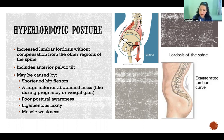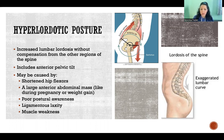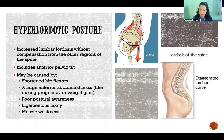Hyperlordotic posture also includes anterior pelvic tilt. I included a link to an explanation of pelvic tilt in the description below if you'd like a review of what that means and how to assess it. Hyperlordotic posture can be caused by all sorts of things — it's a very common postural abnormality. It could be caused by shortened hip flexors pulling the pelvis into anterior pelvic tilt.